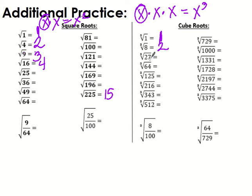Cube root of 27: three times three is nine, times three is 27 — so the answer is three. Cube root of 64: four times four is 16, times four is 64 — so the answer is four. See if you can find the pattern for the rest. The last one is also 15.